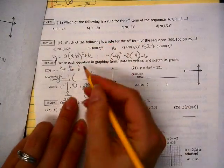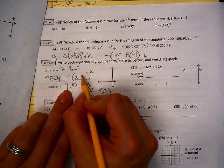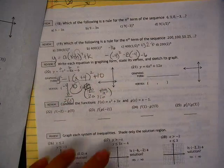10 goes there. So remember, inside here is the opposite, so that's going to be a positive 4. And then outside is just whatever it says, which is a positive 10.